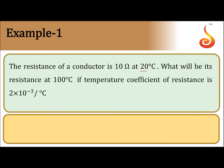Here they have given at 20 degree Celsius — let us say this temperature is T1 — the resistance is 10, let us say it is R1. At another temperature T2, the higher temperature, what will be its resistance? That is what they are asking; let that be R2. They have given temperature coefficient alpha is 2 into 10 to the power minus 3 per degree Celsius.